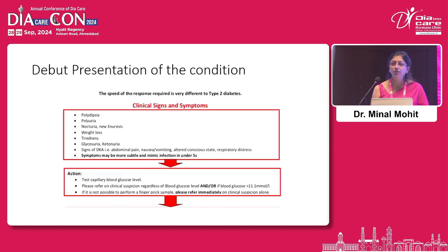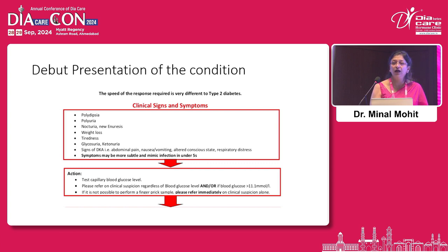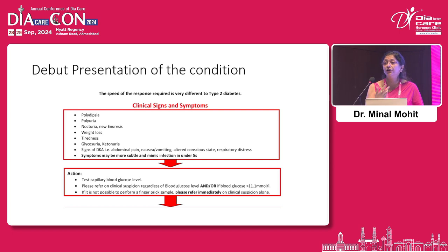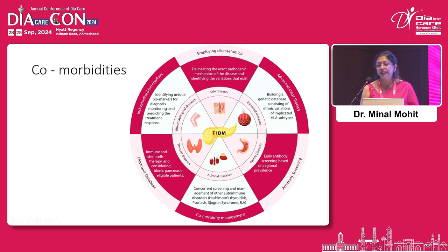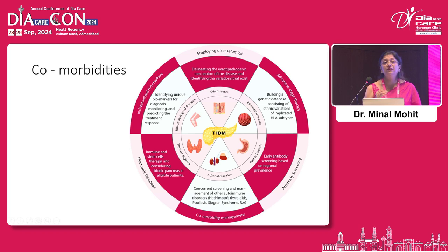Coming to the debut presentation — we know that DKA is the most common presentation. Why? Because we missed the earlier presentations. The child might be complaining of polyuria, polydipsia, and most importantly, a child may suddenly develop enuresis. A child above five years who had learned toilet training suddenly starts enuresis — think of type 1 diabetes. Then of course DKA is the most common presentation. Coming to comorbidities, type 1 is an autoimmune condition. So there can be rheumatological diseases associated, skin disorders, intestinal and gastric issues, and the most common we study is celiac. We can also have adrenal autoimmune association.